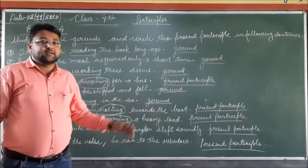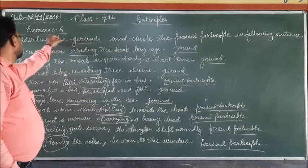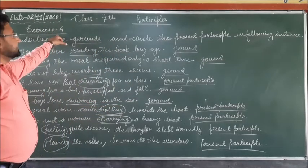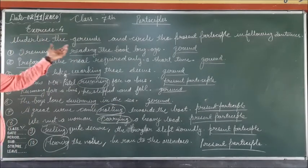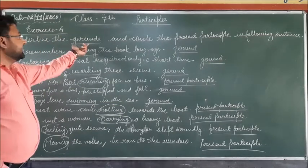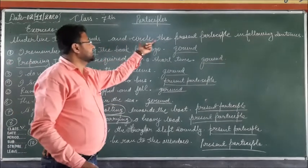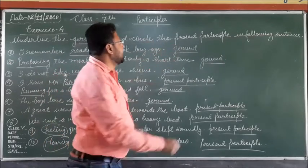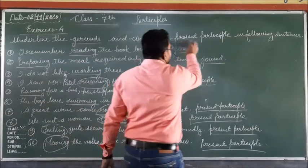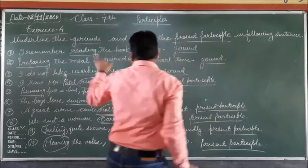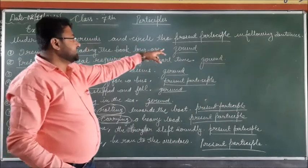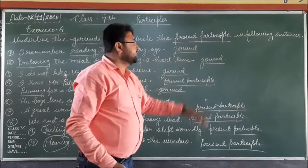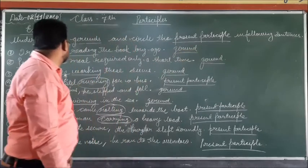Now, students, in Exercise 4, you have to underline the gerund and circle the present participle. Identify and distinguish between gerunds and present participles in the following sentences.